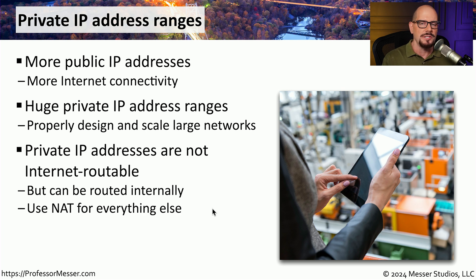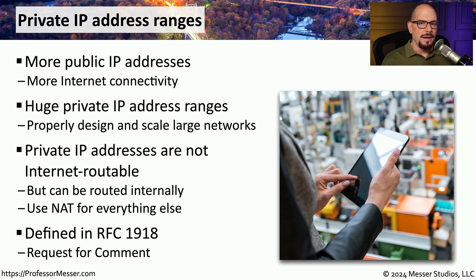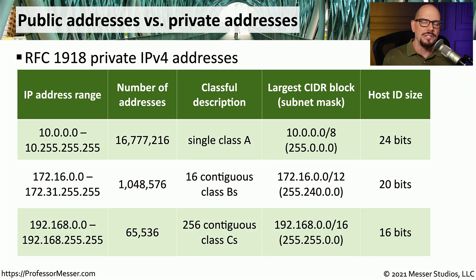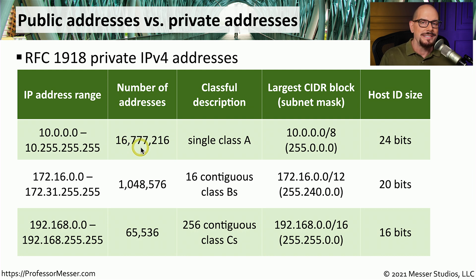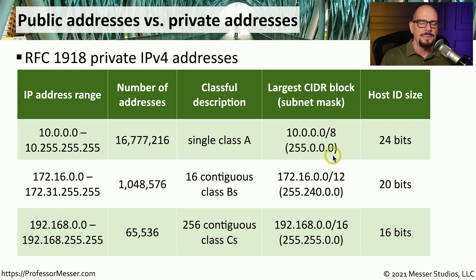We'll learn more about Network Address Translation as we go through this course. For details on private IP addresses, you can reference RFC 1918, the standard that defines these ranges and how they can be used. RFC 1918 defines three different ranges set aside for private IP addressing. The first is 10.0.0.0 through 10.255.255.255 — over 16 million addresses — referred to as a single Class A block, written as 10.0.0.0/8. The subnet mask for a /8 is 255.0.0.0, giving a host ID size of 24 bits.